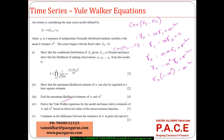From the Yule-Walker equations, gamma 0 times (1 minus alpha squared) equals sigma squared. We know alpha equals gamma 1 over gamma 0, which is rho 1, the first autocorrelation. Therefore, sigma squared equals gamma 0 times (1 minus rho 1 squared). These are the Yule-Walker estimates of alpha and sigma squared.